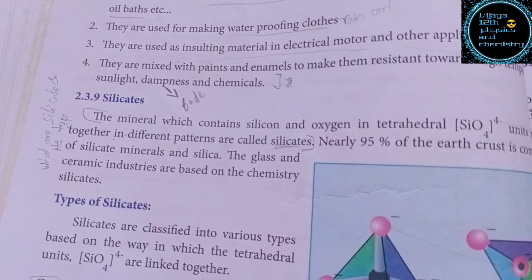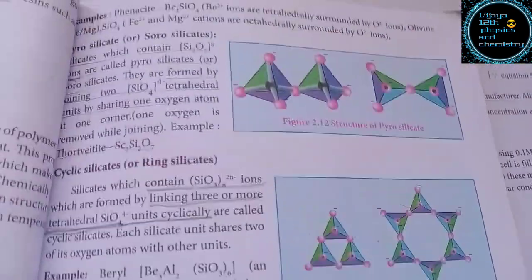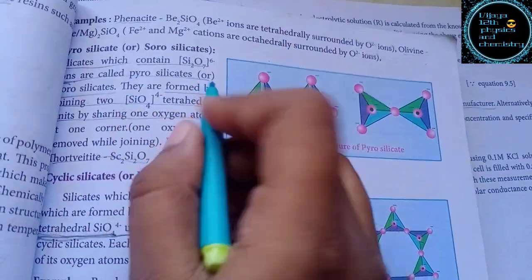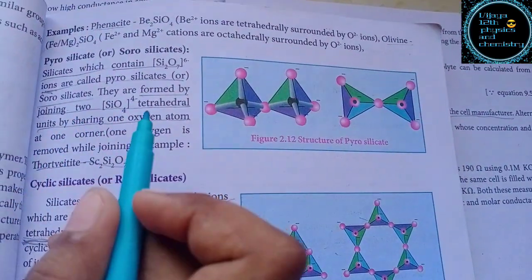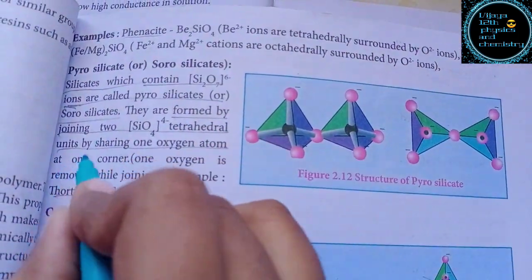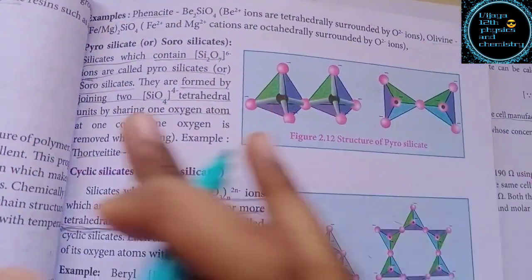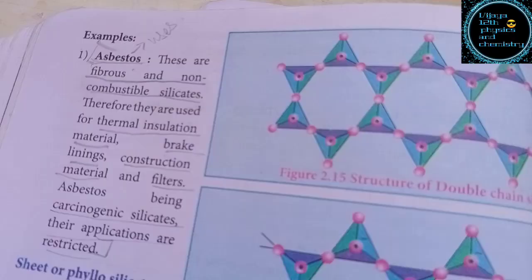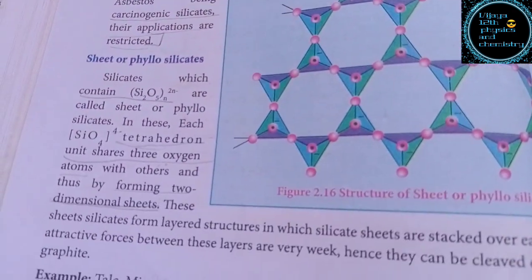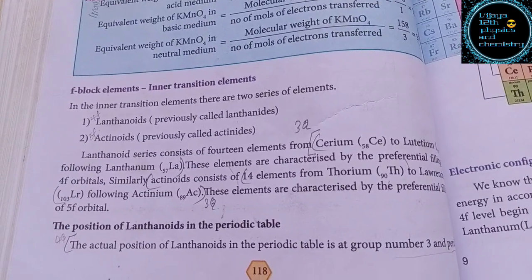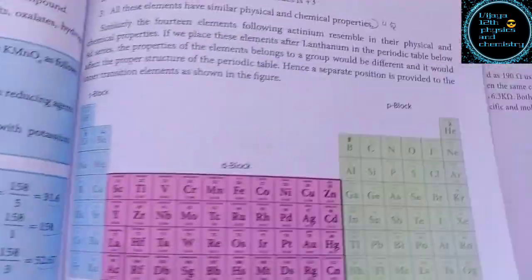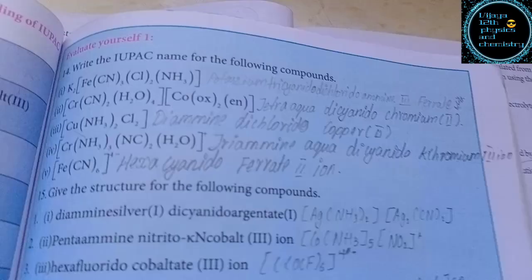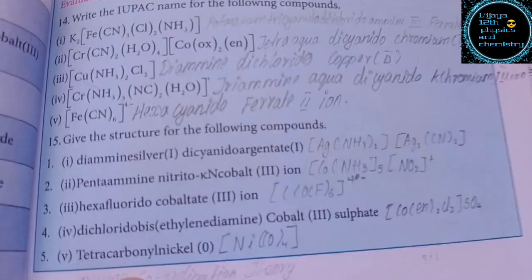Let's try the 5 types of silicates and the 4 types of silicates. There are 5 types of silicates to cover. IUPAC naming is very important.